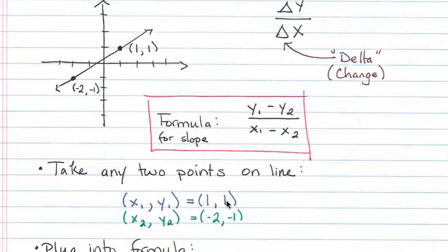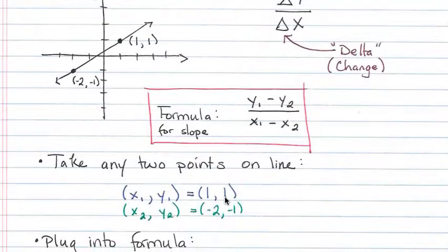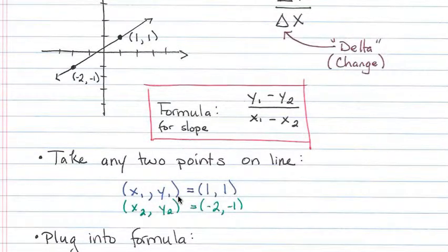For our second point, I picked negative 2 comma negative 1. That is going to be our second x and our second y. So negative 2 is our second x, and our second y is negative 1. So y2 is negative 1, x2 is negative 2. We just take these numbers after we have picked the points and assigned x1, y1 to this point and x2, y2 to this point.